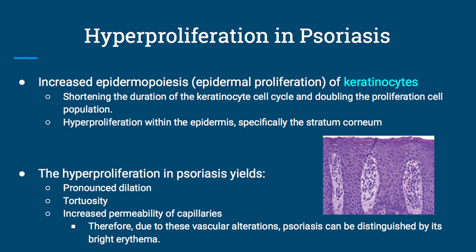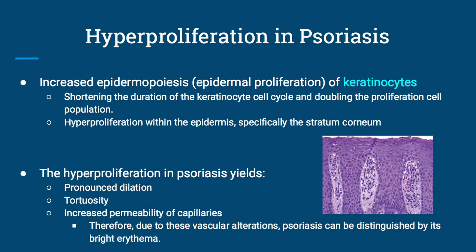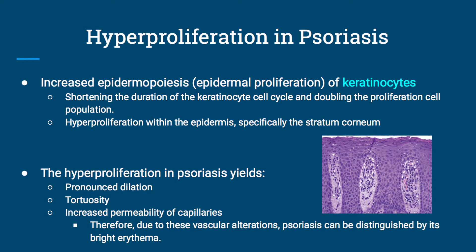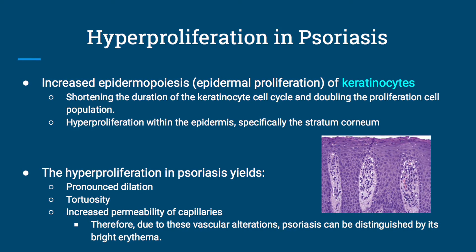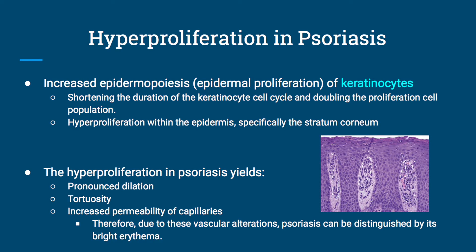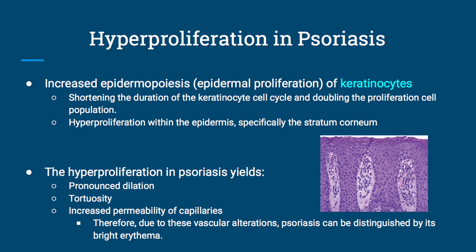One of the main things that hyperproliferation in psoriasis yields is the increased permeability of the capillaries, which you'll see in the picture. The dilated capillaries are expressed in dark purple, and this is actually what causes the bright erythema seen in psoriasis patients — because of the increased blood flow and the vascular alterations.